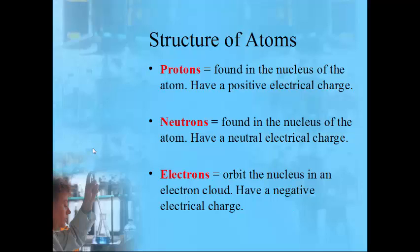Protons are found in the nucleus, or the center of the atom, and have a positive electrical charge — P for proton, P for positive. Also in the nucleus are neutrons, which have no electrical charge, or a neutral charge — N for neutron, N for neutral. Electrons orbit the nucleus, kind of like planets orbit the Sun, and have a negative charge.